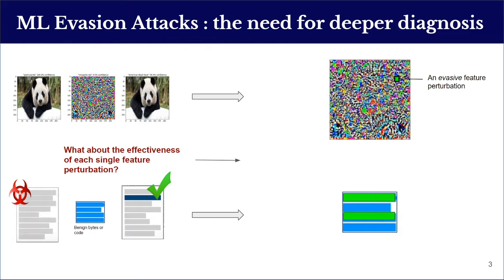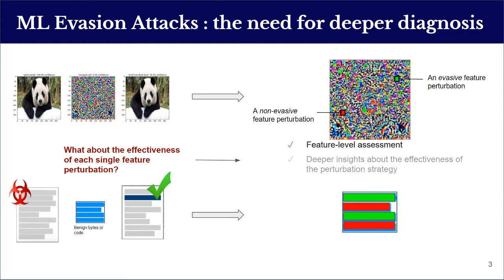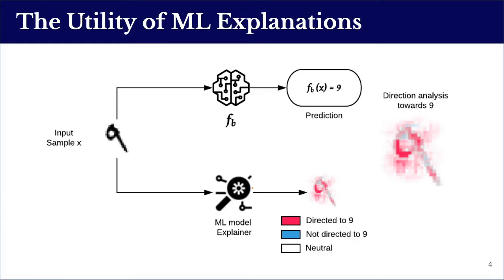More precisely, the added noise to each feature can either produce an evasive perturbation that leads to misclassification — represented in green — or it can be a non-evasive perturbation that might stand against the adversary's goal. Therefore, a feature-level perturbation assessment is required to obtain deeper insights about the effectiveness of the perturbation strategy. The main motivation is to separate single feature perturbations linked to effective evasion from those that do not play a role in the evasion goal.